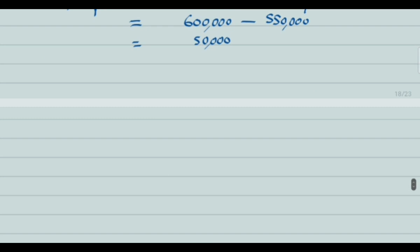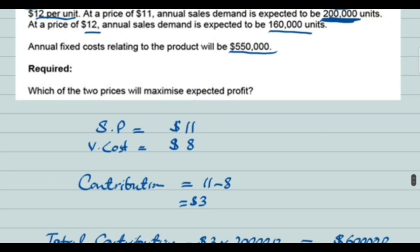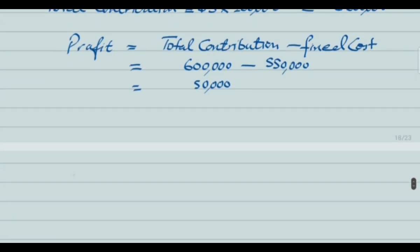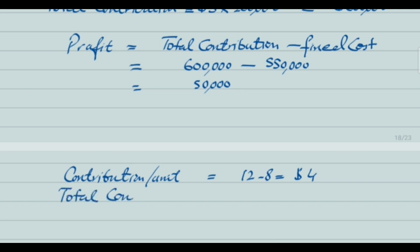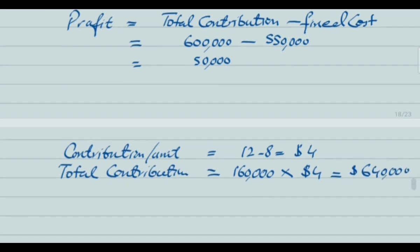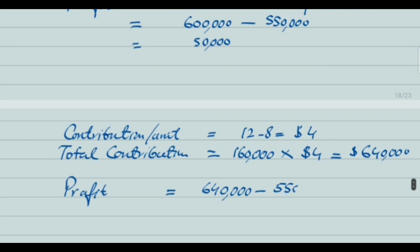Total contribution is $600,000 and fixed cost is $550,000, so profit at $11 price is $50,000. Now for the $12 scenario with expected demand of 160,000 units: contribution per unit is $12 minus $8 equals $4. Total contribution is 160,000 multiplied by $4 equals $640,000. Subtracting fixed cost of $550,000 gives a profit of $90,000.